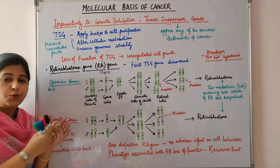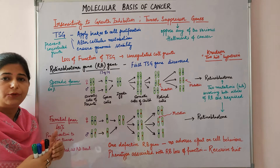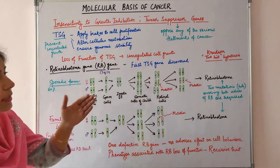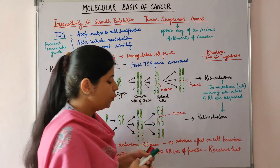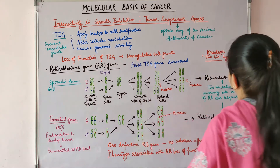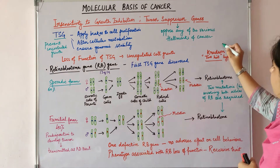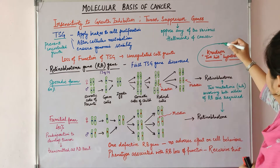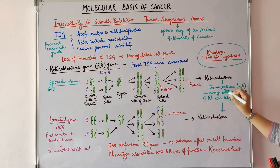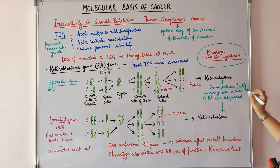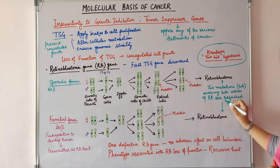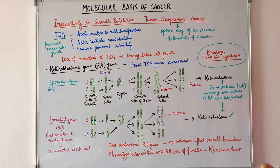These two patterns of occurrence of retinoblastoma can be explained by Knudsen's 2-hit hypothesis. According to this hypothesis, two mutations or hits involving both the alleles of RB are required to produce retinoblastoma.